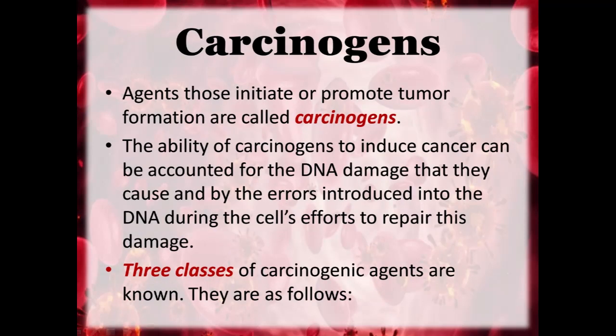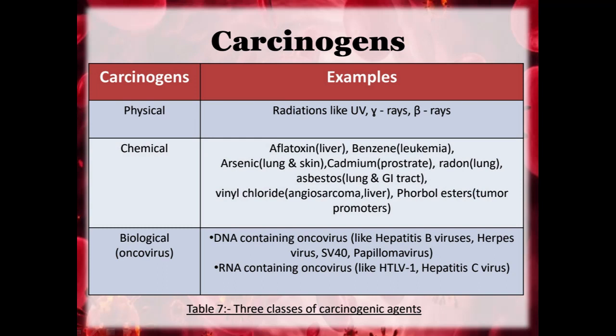Carcinogens are agents that initiate or promote tumour formation. The ability of carcinogens to induce cancer can be accounted for by the DNA damage they cause and by the errors introduced into DNA during the cell's efforts to repair this damage. There are three classes of carcinogenic agents: physical carcinogens such as UV, gamma rays, and beta rays; chemical carcinogens such as aflatoxin, benzene, arsenic, cadmium, and radon; and biological or oncovirus carcinogens including both DNA and RNA containing oncoviruses.